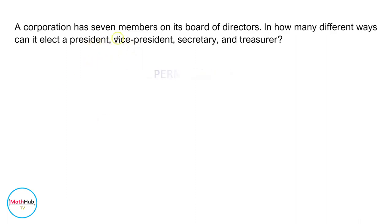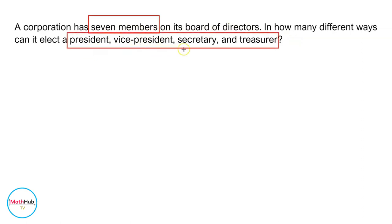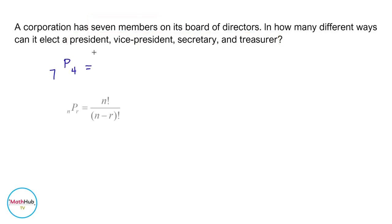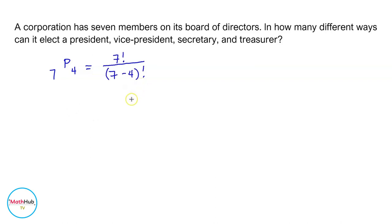Since there are seven members on the board and they are only going to elect four different officers, we have permutation seven taken four. Using the permutation formula, this is equal to seven factorial all over seven minus four factorial. Seven minus four is equal to three factorial.